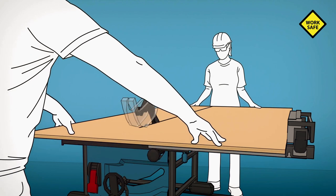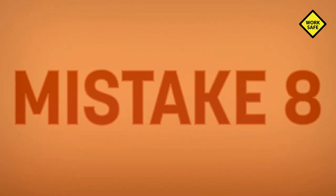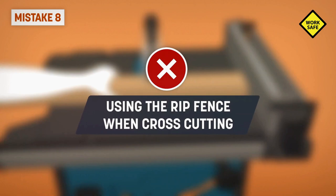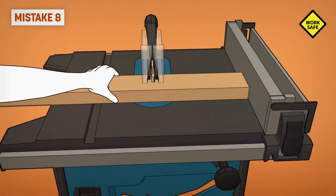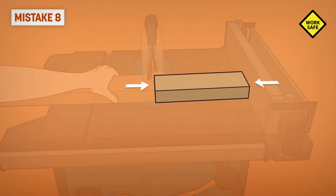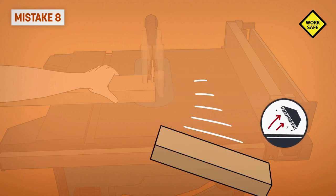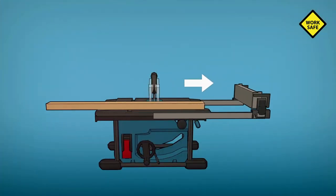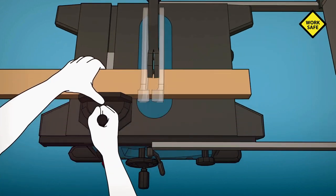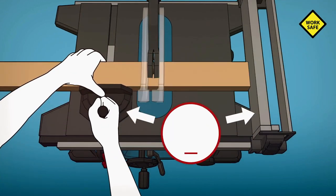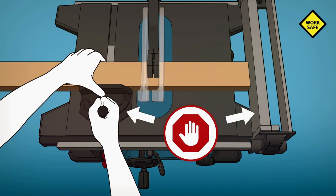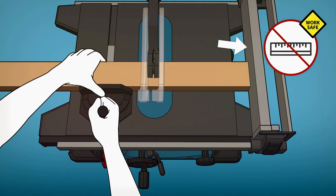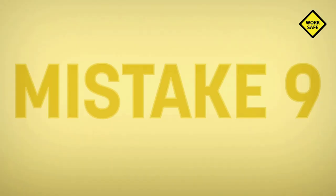Mistake eight: using the rip fence when cross-cutting. Cutoff combined between the blade and the rip fence can cause kickback. When making cross cuts, reposition the rip fence and use the miter gauge instead. Never use the rip fence and the miter gauge at the same time, or the rip fence as a length stop.